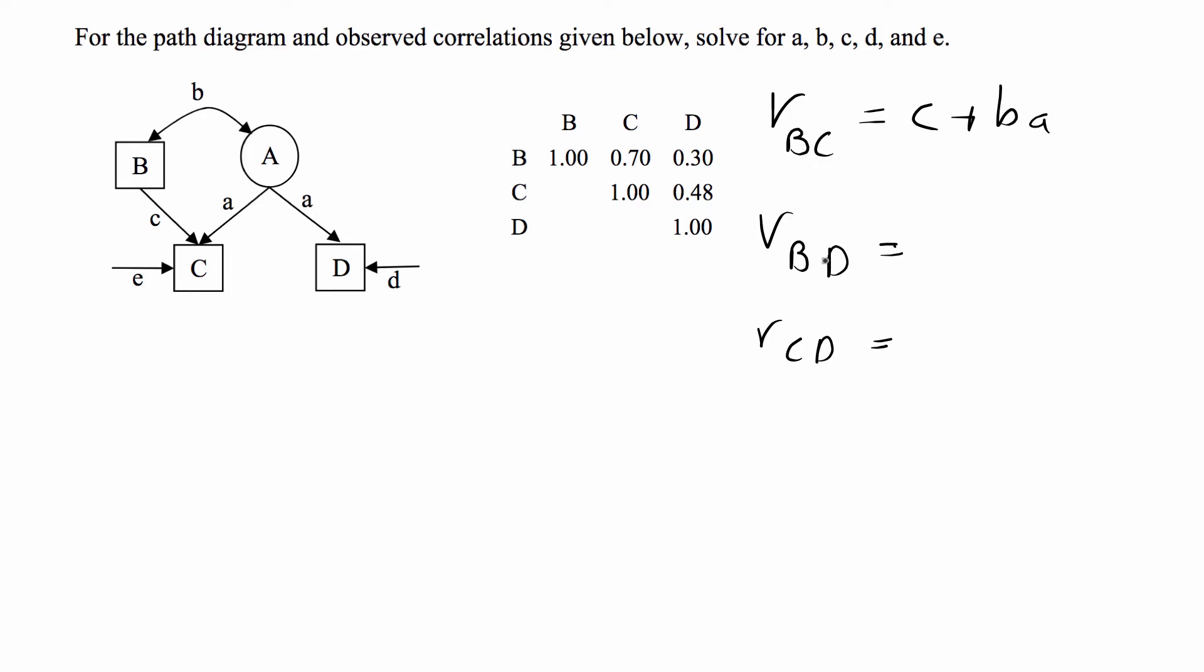Next we're going to do the correlation between B and D. B and D, so we can do B,A, and we cannot go forward and back. That violates one of the rules, so B,D correlation is just B,A.